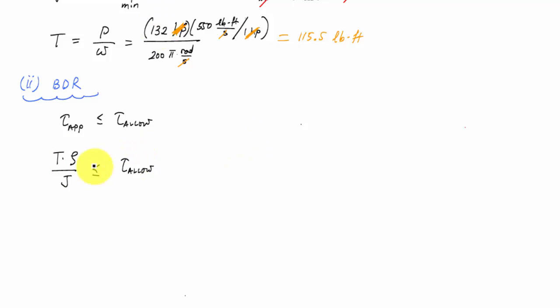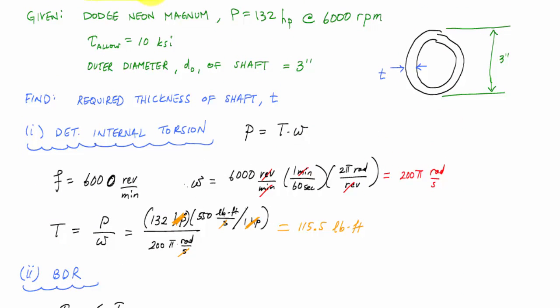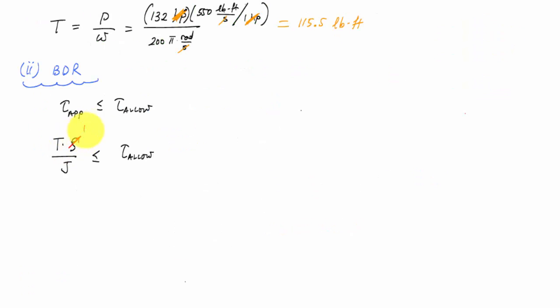And I know that this rho, if I go back and I look at my cross section, I know my maximum shear stress occurs at the outer radius here, which is 1.5 inches. This torque is 115.5 pound feet. And this allowable stress is 10 KSI. And here for hollow circular shaft, my polar moment of inertia is pi over two outer radius to the fourth minus the inner radius to the fourth.